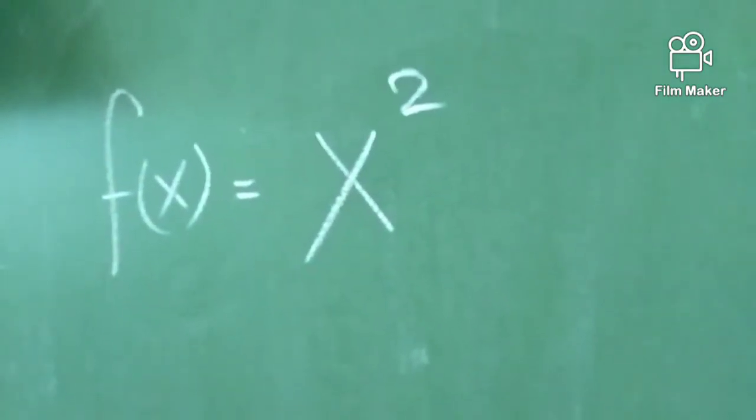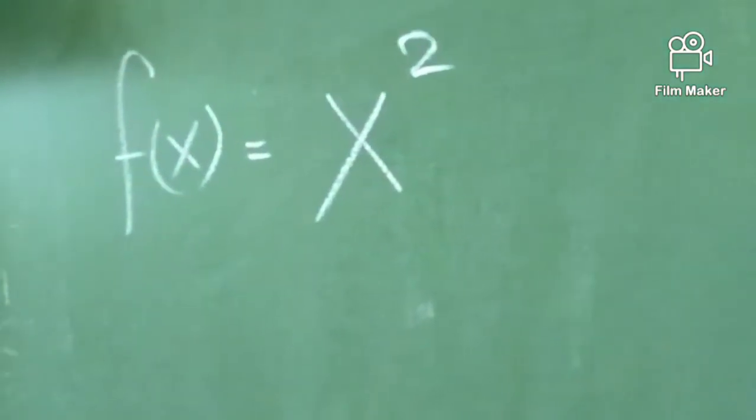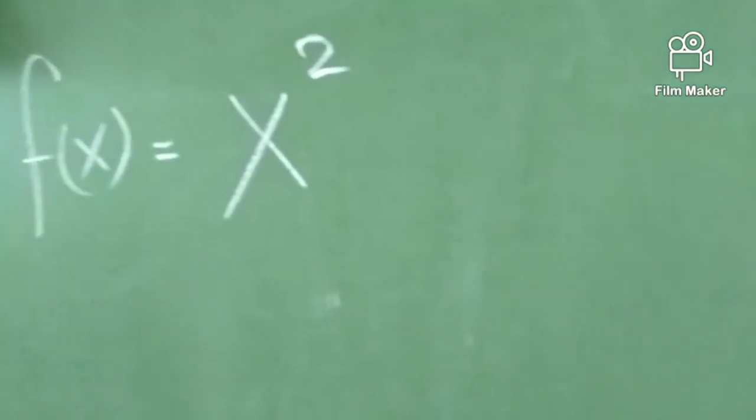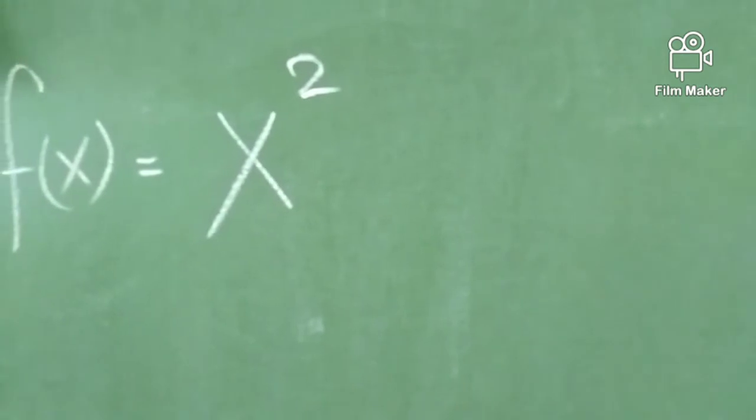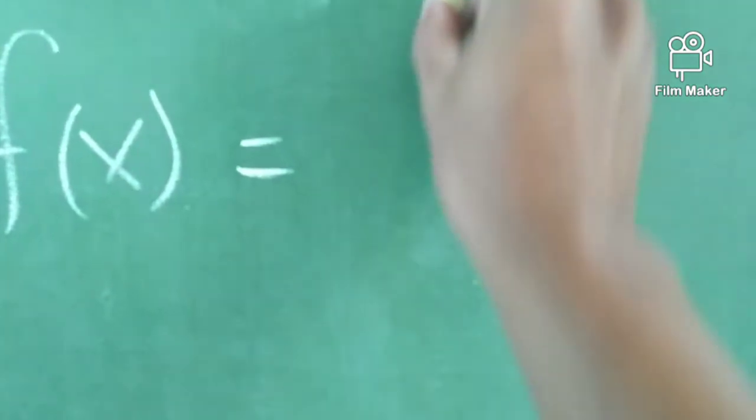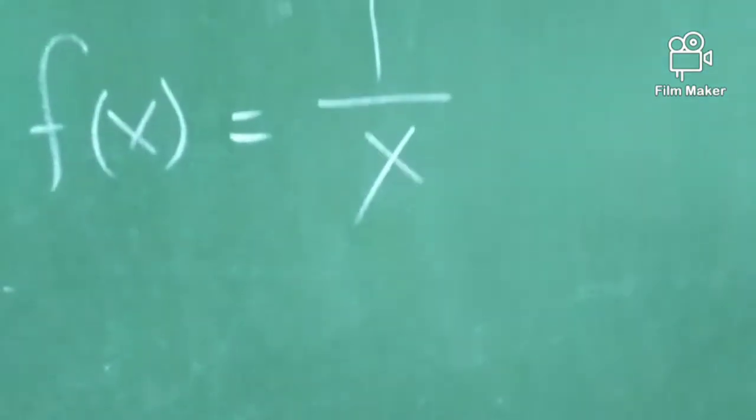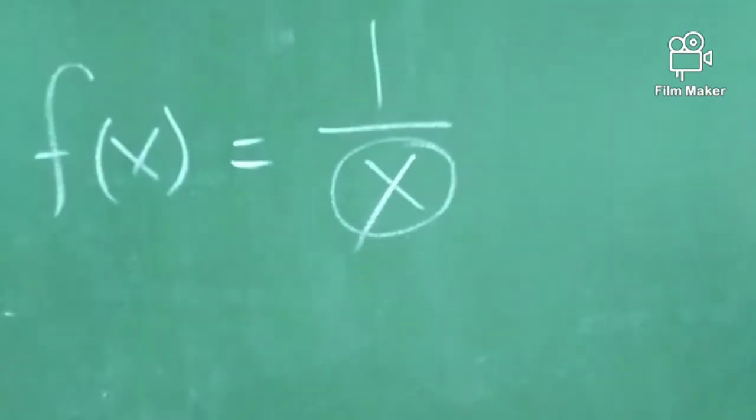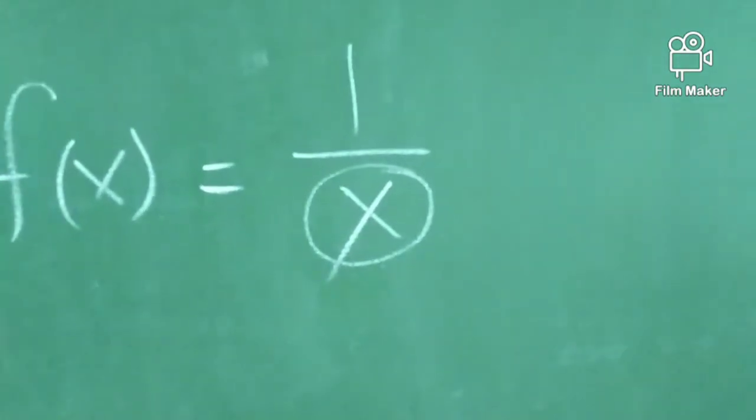We need to remember certain things to identify what cannot be polynomial functions. What can we say makes it unable to become a polynomial function? F of x equals 1 over x. This cannot be a polynomial function. Why?